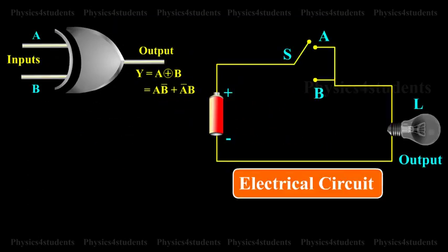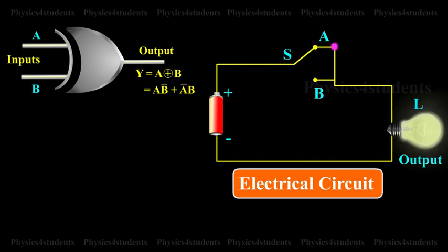The equivalent switching circuit is shown in the visual. Switch positions A and B will individually make the lamp to be ON, but the combination of A and B is not possible.